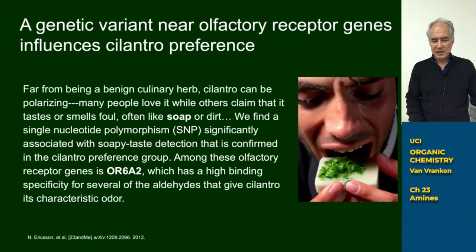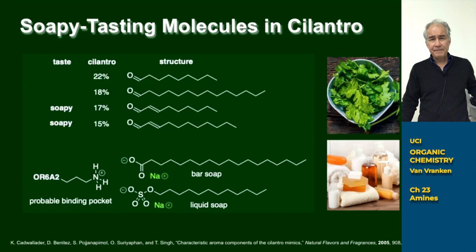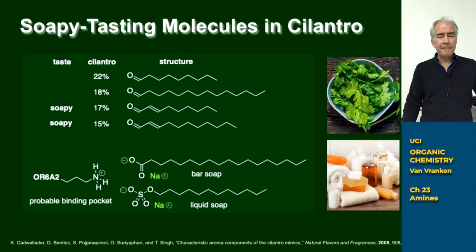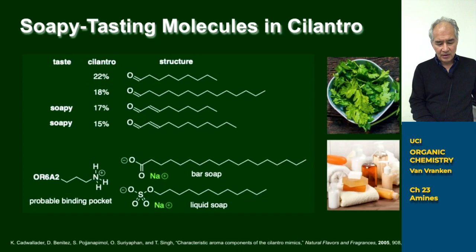Let's take a look at the molecules that are involved in this perception of soapy flavor by some people with cilantro or coriander. If you take the essential oil of cilantro or coriander and look at the composition — extracting it into a steam distillation — what you would find is a lot of aldehydes that play an important role in the composition of that essential oil. Aldehydes like decanal, tetradecanal make up 18% of the composition of the essential oil.